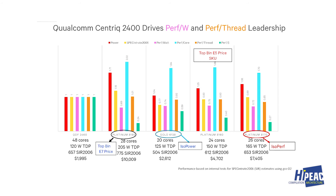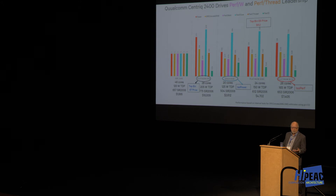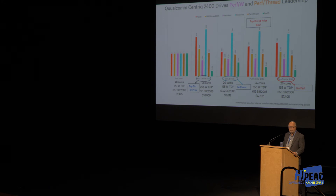If you take the x86 at 125 watts and compare it with this energy-efficient design, you start seeing that on all metrics — performance per dollar, performance per watt — the energy-efficient design looks much better. And if you're trying to deliver a certain level of performance, the energy-efficient design wins out again. The slides are on the website if you want to check the details.